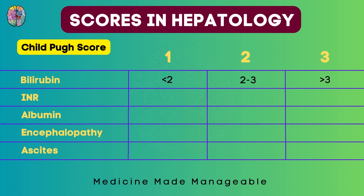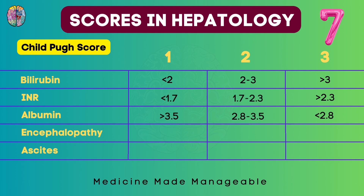To remember the INR values, remember the number 7. If INR is less than 1.7, score of 1. If it is between 1.7 and 2.3 — the difference is approximately 0.7 — score of 2. If more than 2.3, score of 3. For albumin: if levels are more than 3.5, score of 1; between 2.8 and 3.5 — again the difference is 0.7 and both numbers are divisible by 7 — score of 2; and if less than 2.8, score of 3.